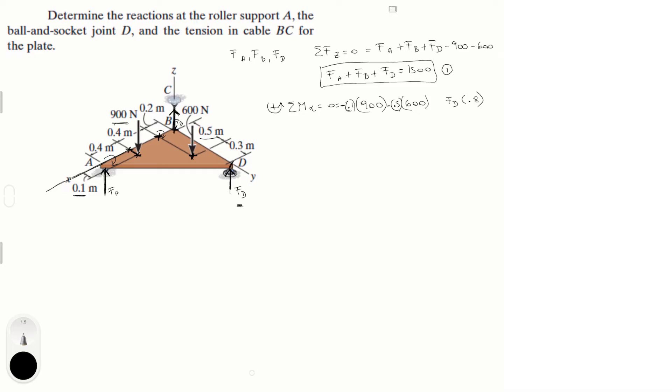And the last is F_D, F_D times 0.8 because that's the distance between the x-axis and F_D. Distance from here to where the force takes place is 0.8, which is 0.5 plus 0.3, and it is positive because it's trying to turn the assembly counterclockwise. So we have an equation with only one variable, that's cool. So let's solve for F of D to get 487.5 newtons.